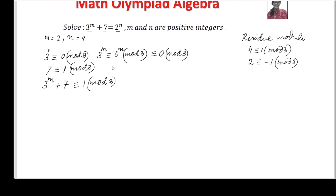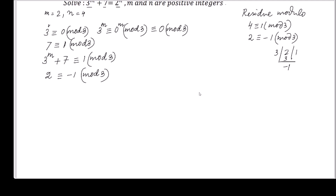Now coming to the right-hand side, which is 2 raised to the power n. Since 2 is equivalent to negative 1 modulo 3 — as I have written — that means 2 divided by 3 gives 1 times 3 and negative 1 as the residue. So I may write 2 raised to the power n is equivalent to negative 1 raised to the power n modulo 3.